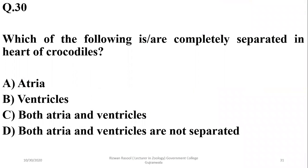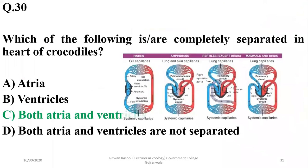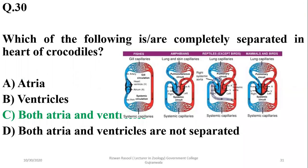Question twenty-nine: which structures are completely separated in the heart of crocodiles? Crocodiles have atria and ventricles completely separated, giving them a fully developed four-chambered heart like birds and mammals.